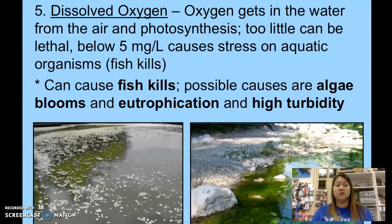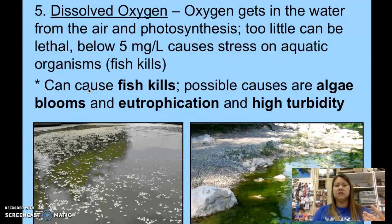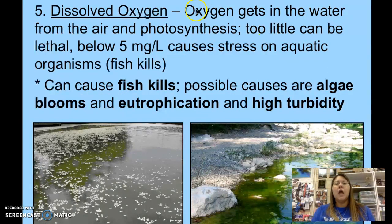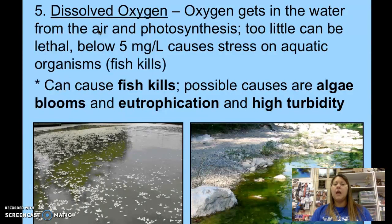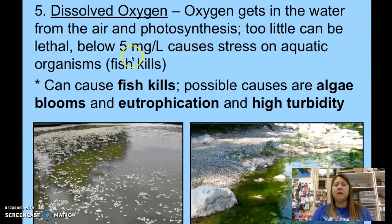Number five is dissolved oxygen. We breathe in oxygen, and so do aquatic animals. Fish have gills that allow water to come in and filter out oxygen, which goes to their lungs so their respiratory system can function and support cellular respiration in the mitochondria. Oxygen gets into water in a couple of ways: from the air where it contacts the water surface, and from photosynthesis by aquatic plants and algae releasing oxygen. Dissolved oxygen levels below 5 mg/L cause too much stress on aquatic organisms.